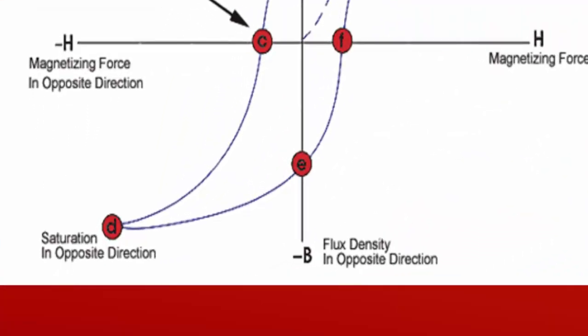After this, the magnetic force is increased in negative direction. The material will again become magnetically saturated but in opposite direction, or say till point D. After that, reducing H to zero brings the curve to point E as shown in the graph.